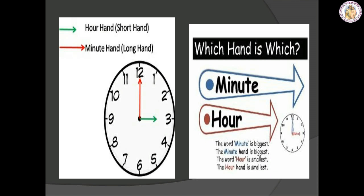In this clock, we are going to see which is the hour hand and which is the minute hand. In a clock, the minute hand will always be bigger in size — that is called the long hand. The hour hand will always be short in size or smaller in size. The red color is called the minute hand, which is bigger in size. The green color is called the hour hand, which is the short hand.